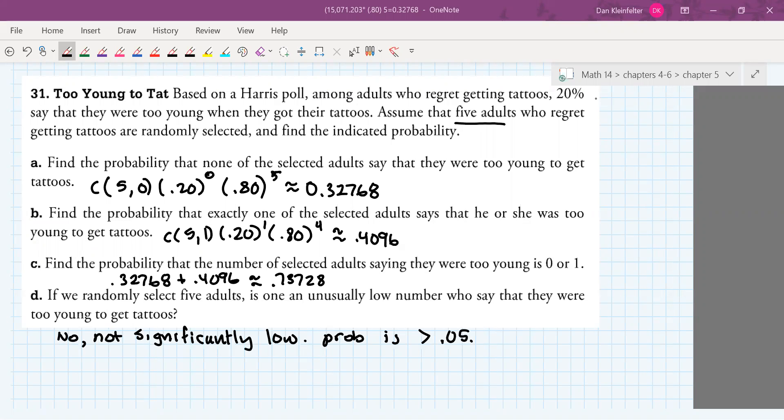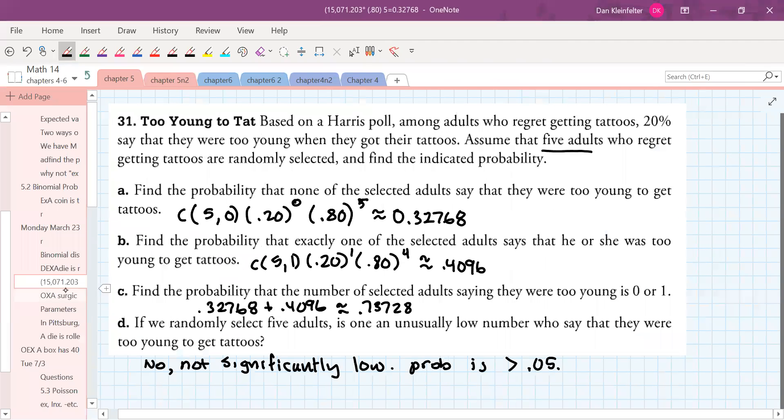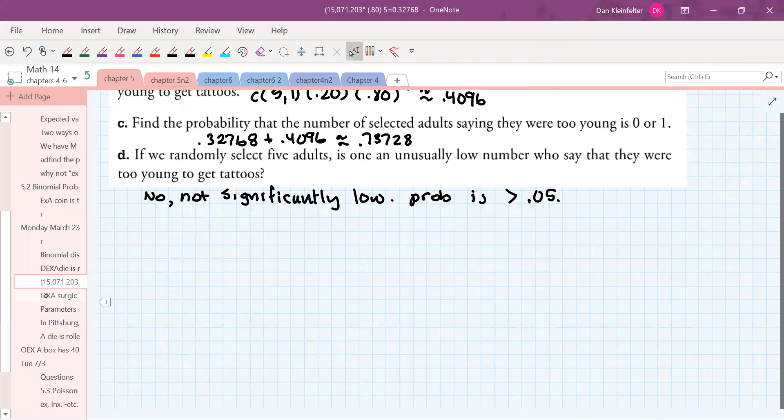If you continue to think about this one, it should make sense that one is not significantly low. So if we're taking groups of five adults, 20% of five adults is just one adult. So having one indicate that they were too young is not going to be unusually low. Okay. So we just have a couple of more examples.